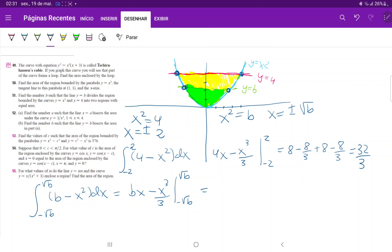So this is equal to bx minus x cubed over 3 from negative root b to positive root b. Then this becomes b times 3 halves when we're inputting the upper boundary, minus b to the 3 halves over 3. And now we're evaluating negative root b.